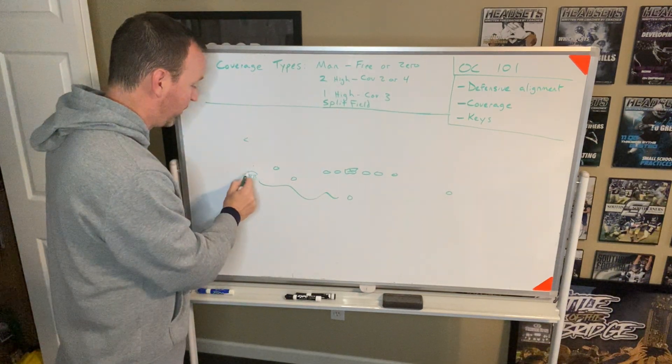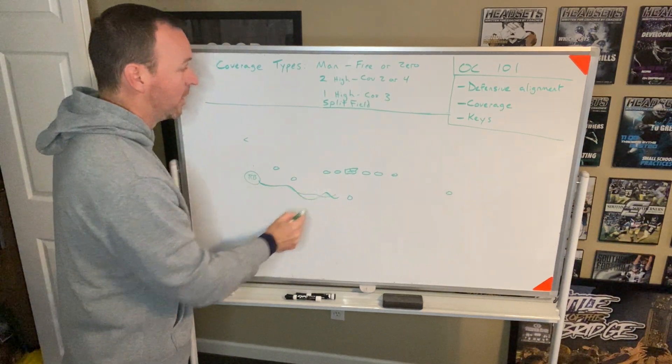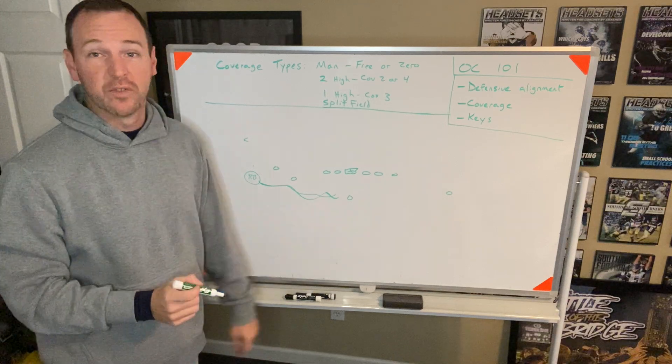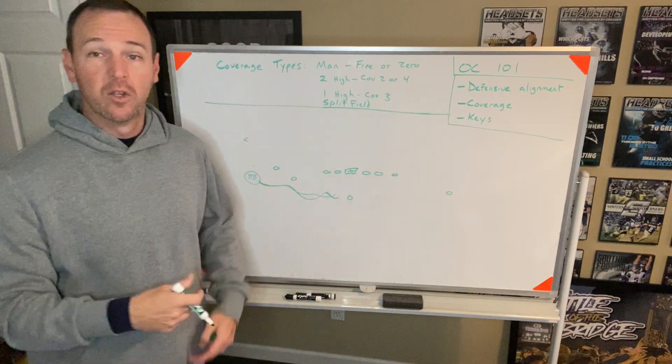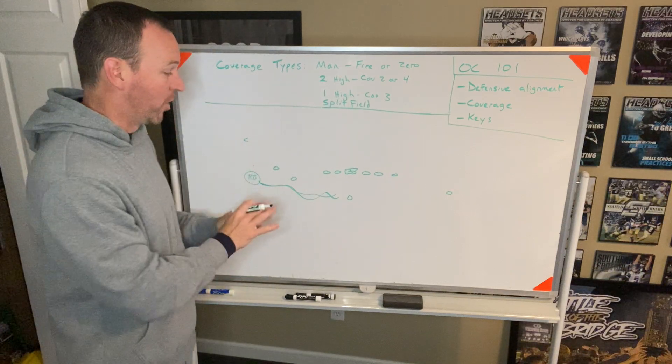So bringing the receiver, running back, tight end, H-back, whatever, here and bringing him in will identify, like that's a pre-snap, a very easy movement. You call it jump, you call it shift, you call it whatever is your terminology, but bringing him in will help.